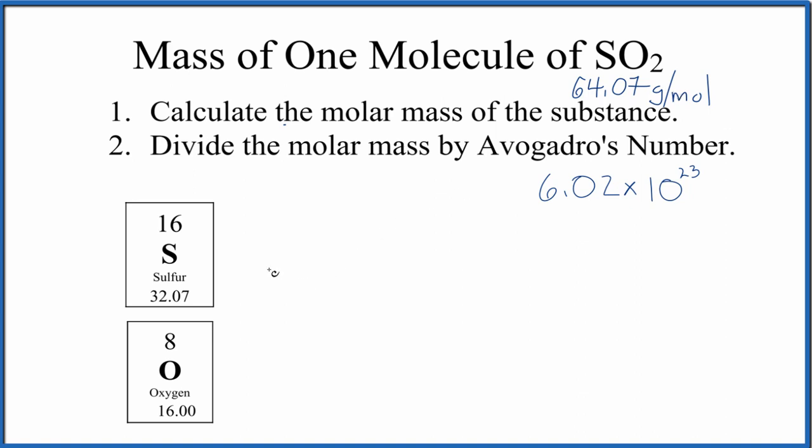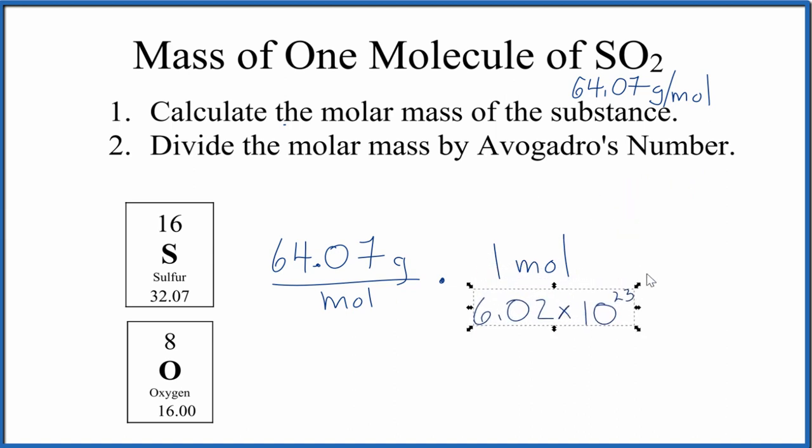So we have our molar mass. Let's write that up here. We said the units were grams per mole. Then we're going to multiply this by a conversion factor so we can get rid of moles and be left with grams. We know that one mole of any substance is going to have Avogadro's number of particles. Let's just move that down here.